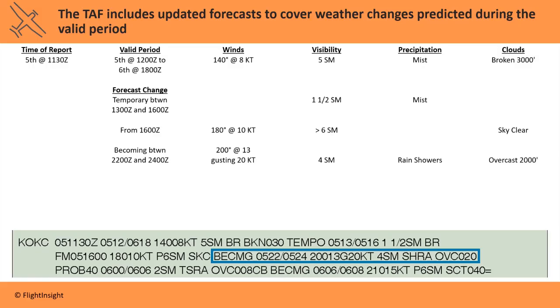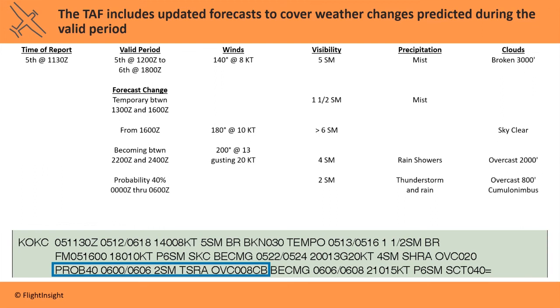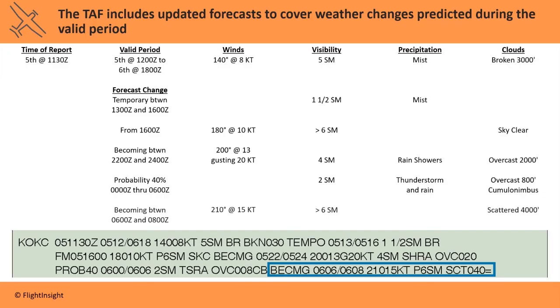Finally, after 0000 Zulu, there's a 40% probability of some more nasty weather ahead, followed by clear skies again toward the end of the forecast's valid period.